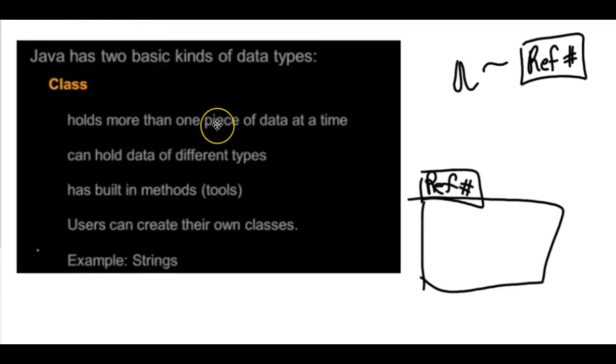The class data type holds more than just one piece of information. The variable holds a reference to that information somewhere in memory, and it's acting like a tag, and that tag is only holding the reference. And then in the memory location is all the data. It can hold different data types. It has built-in methods. Users can create their own classes. A good example of this is the string class, which we're going to do a little bit with today.